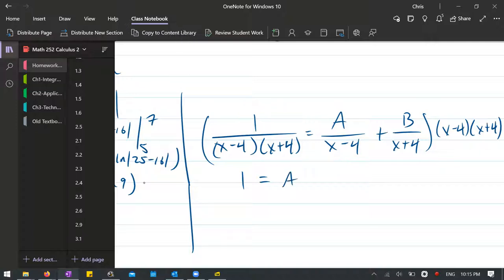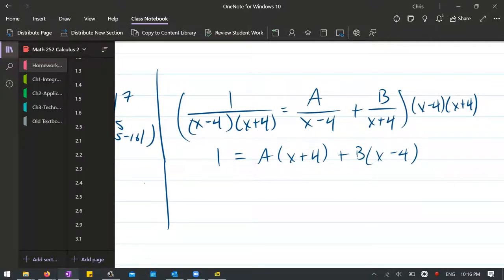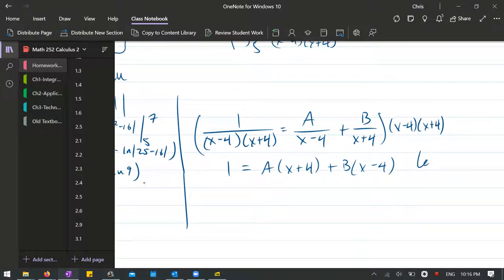So a is multiplied by, the x minus 4 cancel, so you have x plus 4 plus b, x minus 4. Now we can let x equal some different values here. The two smart values are negative 4. So let's do that first. So that'll be a times 0, because negative 4 plus 4 is 0, and plus b, negative 4 minus 4. So that's negative 8b equals 1. Negative 1 eighth equals b.